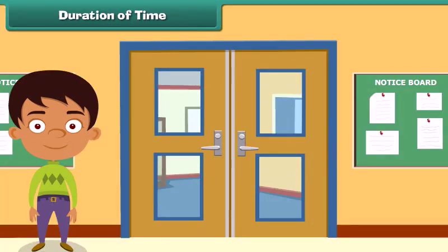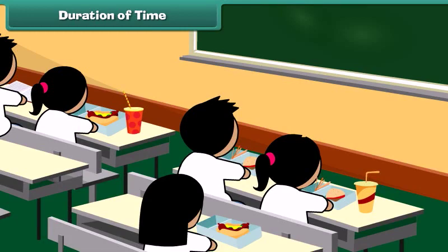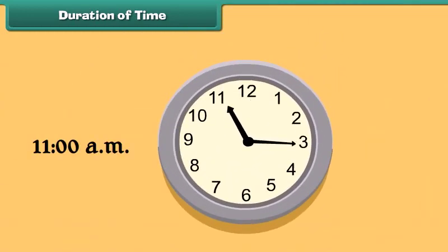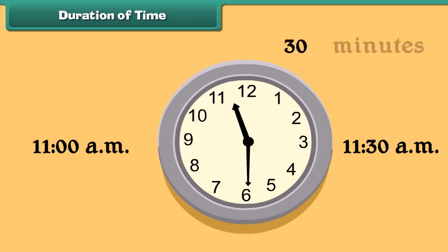Duration of time. The period of time during which anything lasts or exists is called the duration of time. For example, suppose in a school, lunch break starts at 11 AM and lasts up to 11:30 AM. Then we can say that the duration of lunch time in the school is 30 minutes.